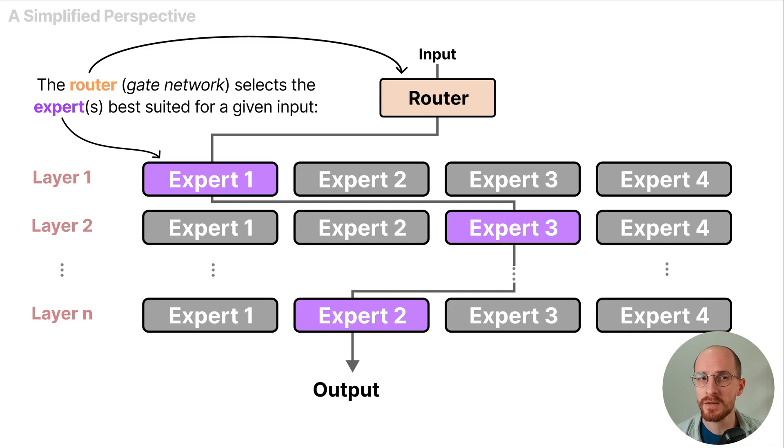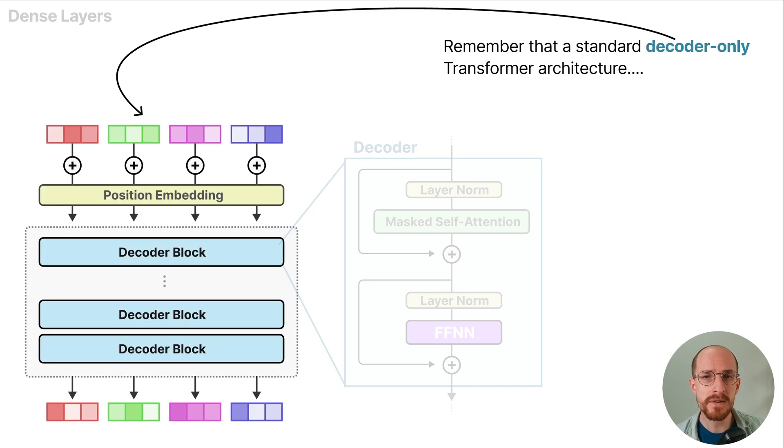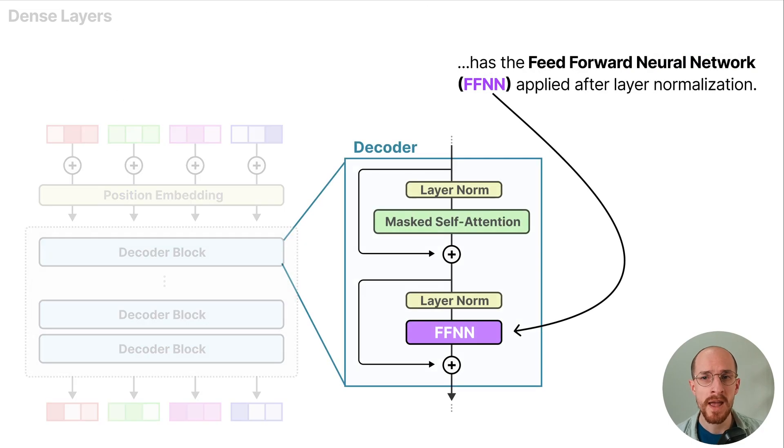The router or gate network selects the experts that are best suited for a given input. And to explore what experts represent and how they work, let us first examine what MoE is supposed to replace, the dense layers. Remember that a standard decoder only transformer architecture has the feed forward neural network applied after layer normalization.